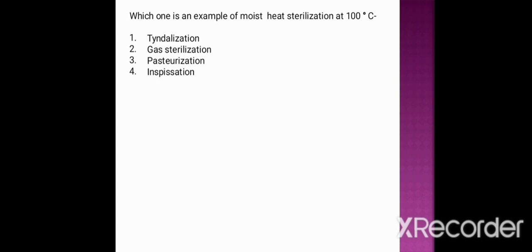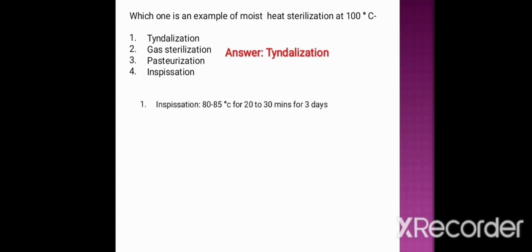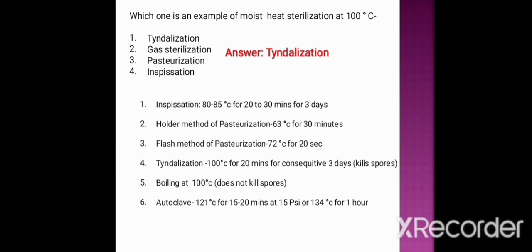Next question: which one is an example of moist heat sterilization at 100 degrees centigrade? Option one: tindalization. Option two: gas sterilization. Option three: pasteurization. Option four: inspissation. The correct option is tindalization, because tindalization is done at 100 degrees centigrade, whereas pasteurization and inspissation are done below 100 degrees centigrade. Inspissation is done at 80 to 85 degrees centigrade for 20 to 30 minutes for three consecutive days. Holder method at 63°C/30 min, flash method at 72°C/20 seconds. Tindalization: 100°C for 20 minutes for three consecutive days, killing endospores. Autoclave: 121°C for 15 to 20 minutes at 15 psi.